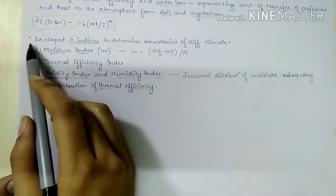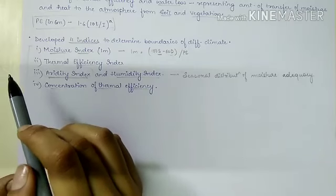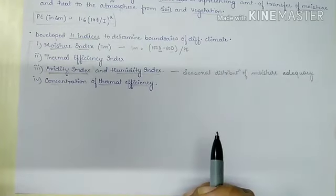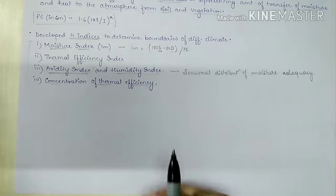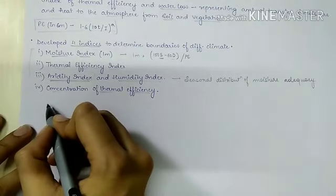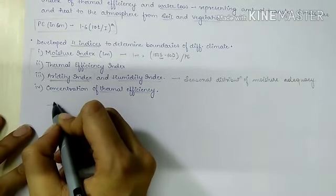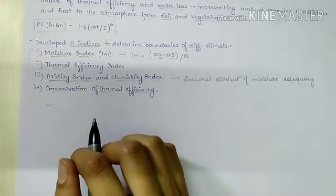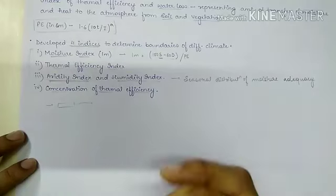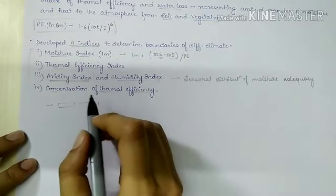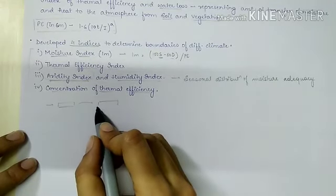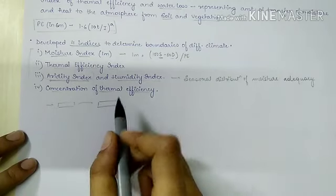Evaluating Thornthwaite's classification, it is actually a very scientific classification based on various formulas, and many geographers accepted it. However, its demerit is that some geographers said there is too much calculation and too many formulas for climatic classification. These were the merits and demerits of Thornthwaite's classification.